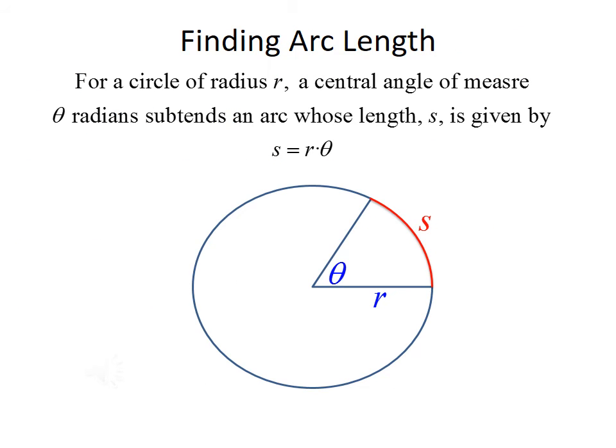Next, we want to talk about finding arc length. For a circle of radius R, a central angle of measure theta radians subtends an arc whose length S is given by the formula S equals R times theta. There's a picture here showing the circle and the sector — the red portion denoted by S is the arc whose length we can find using this formula. Note that in this formula, theta must be in radians.